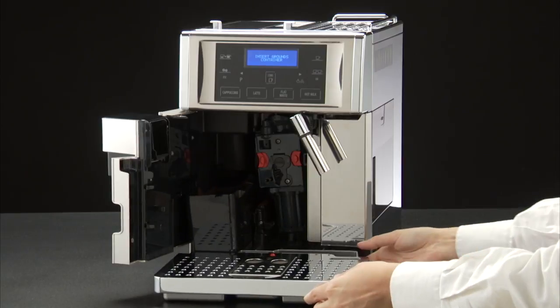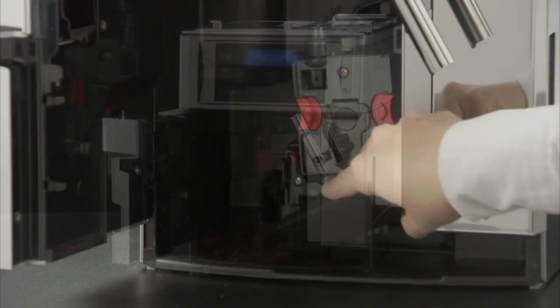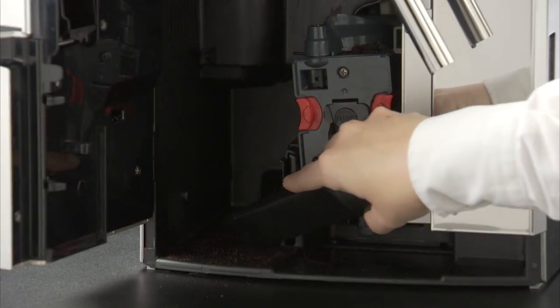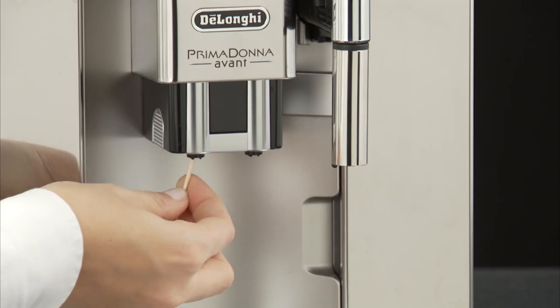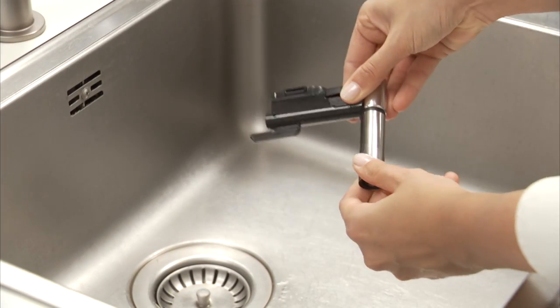Coffee grounds container, drip tray, inside the machine accessible after opening the service door, water tank, coffee spouts and hot water nozzle.